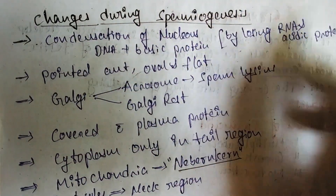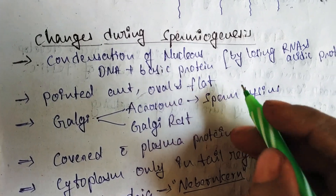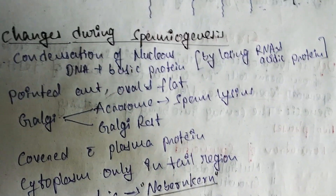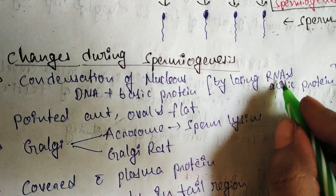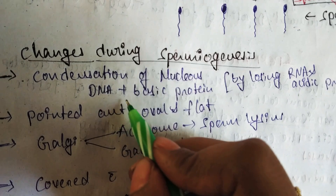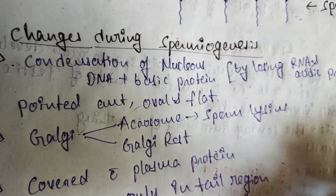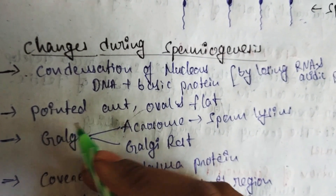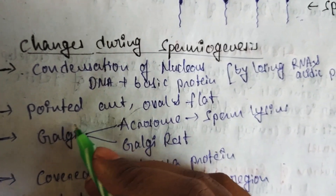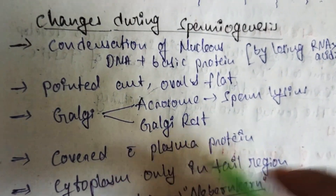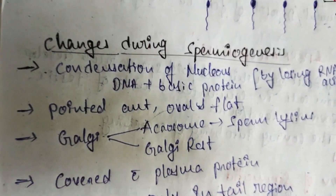The changes during spermiogenesis include: condensation of the nucleus — the nucleus becomes condensed. There is loss of RNA and acidic proteins from within the nucleus, and instead DNA plus basic proteins become present. There is also a structural change in the anterior region — it becomes pointed, oval, and flat in nature.